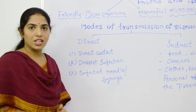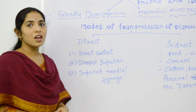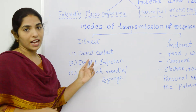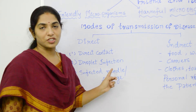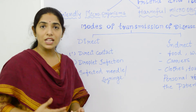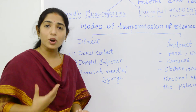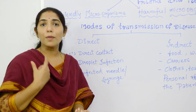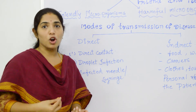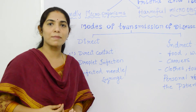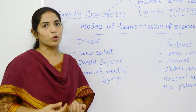Direct contact means the disease spreads from skin to skin contact, mucosa to mucosa contact, or mucosa to skin contact. For example, leprosy and conjunctivitis spread through direct contact from one person to another. The second is droplet infection: when an infected person is talking, spitting, sneezing, or coughing, he releases droplets of moisture from his mouth, which may enter a healthy person and make them sick. For example, tuberculosis or COVID-19.